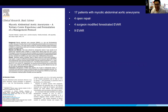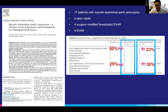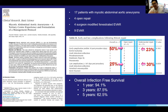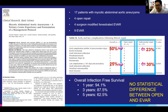For example, here's a paper out of the UK where they looked at 17 patients with mycotic aortic aneurysms. Four underwent open repair, four were around the juxtarenal region with surgeon-modified fenestrated EVARs, and nine were straight infrarenal EVARs. For patients who underwent open repair, early complication rates were up to 50% and late complication rates around 25%. For EVAR, 23% early and 30% late complications. Numbers were very small and didn't reach statistical significance. Overall infection-free survival for everyone — open or EVAR — was 94% at one year, 87.5% at three years, and 62.5% at five years, with no significant difference between open and EVAR for infection-free survival.